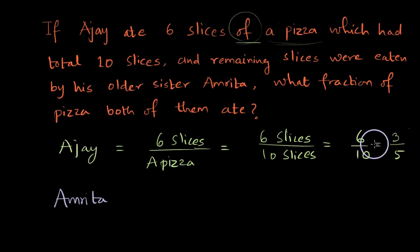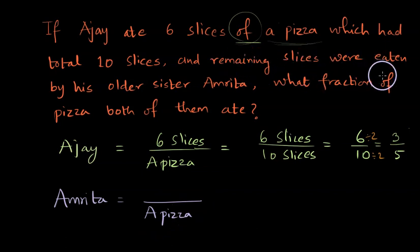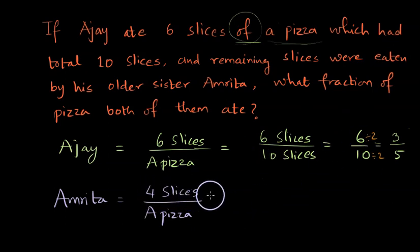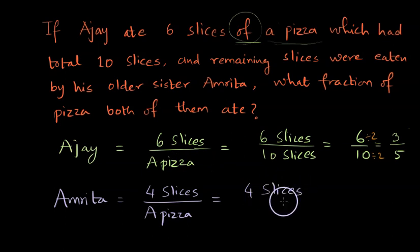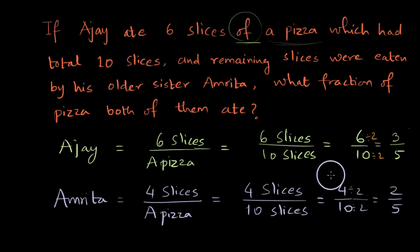Dividing numerator and denominator by 2, Ajay ate 3/5 of the pizza. Now for Amrita: the denominator is again the whole pizza — 10 slices. Since Ajay ate 6, the remaining 4 slices were eaten by Amrita. So her fraction is 4 slices divided by 10 slices, which simplifies to 2/5. Ajay ate 3/5 and Amrita ate 2/5 — Amrita is not going to be happy since Ajay ate more!